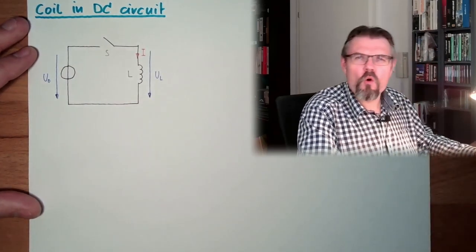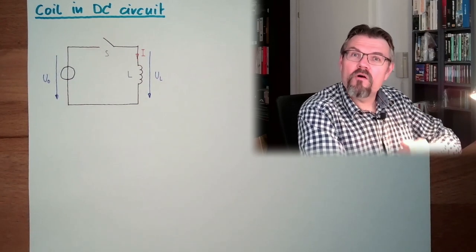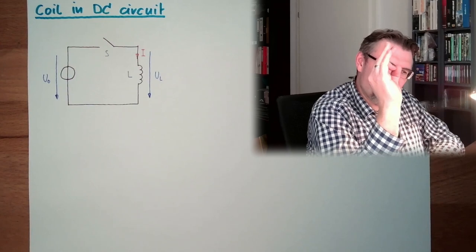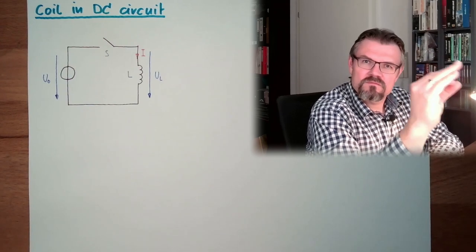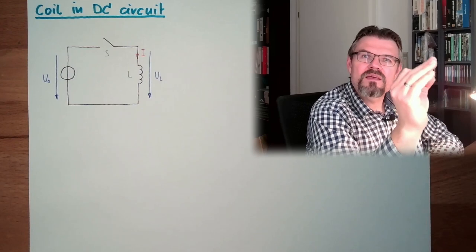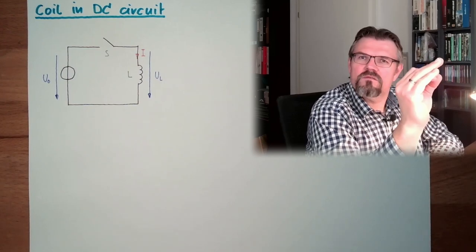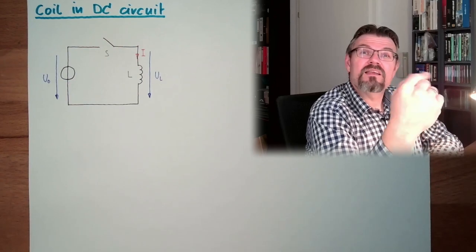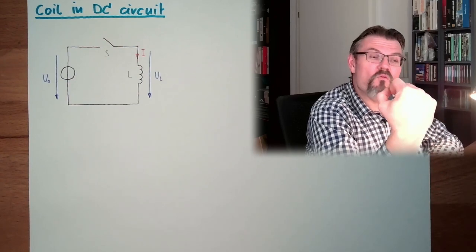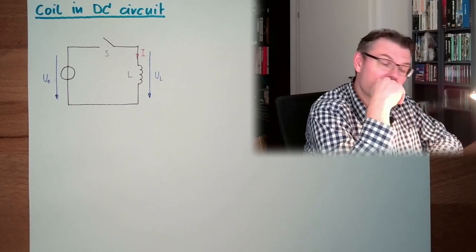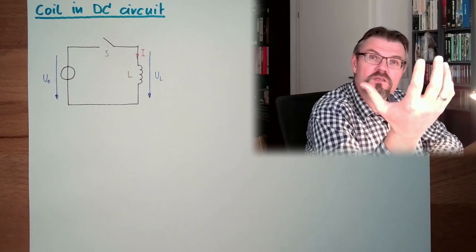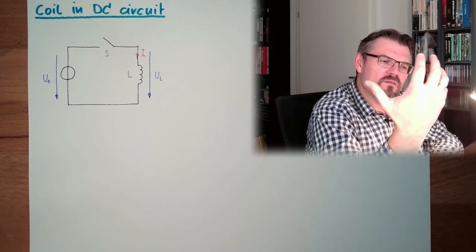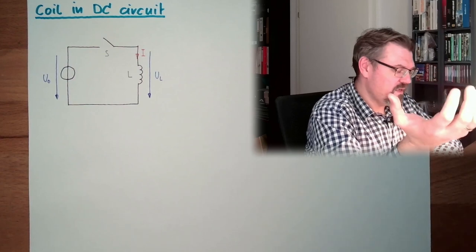We know a coil does want that the magnetic flux is constant. That's the goal of the coil. If this is not the case, the coil will react with a voltage at its ends. So, as soon as there is a voltage at a coil, it is a reaction somehow on the change of flux inside the coil.